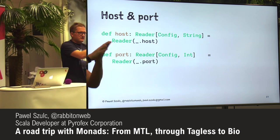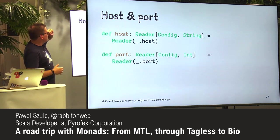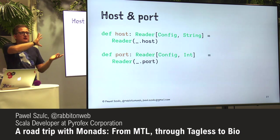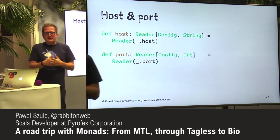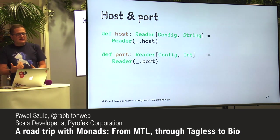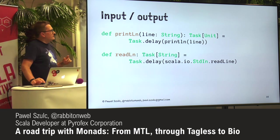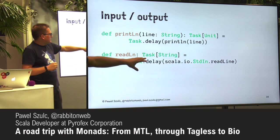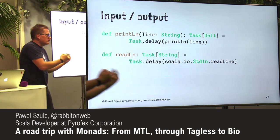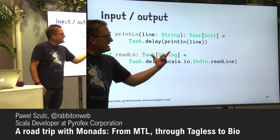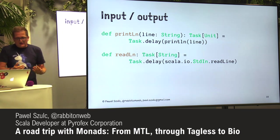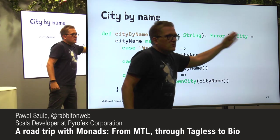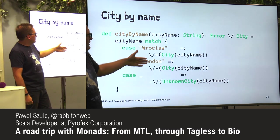Given the building blocks we've seen, this is pretty much straightforward. For host and port, I could have two functions — host and port — which just give me a Reader. As you remember, Reader is just a function from Configuration to a String or Int. For input/output, printing and reading from console is effectful, but I can lift that into a Task from Monix. This becomes a recipe of what should be done — when you call this function, it doesn't really do anything, it just gives you a Task that will do the thing once you run it.